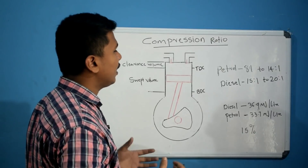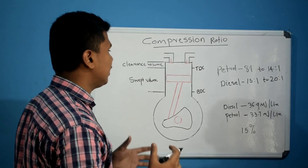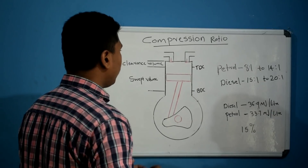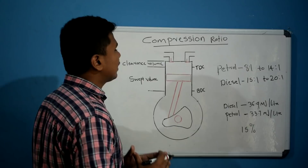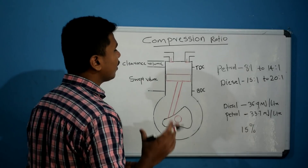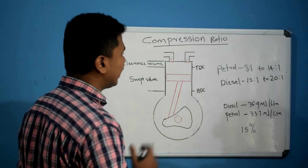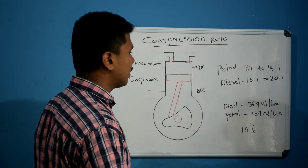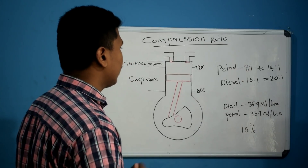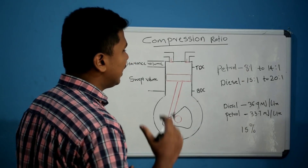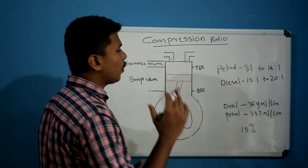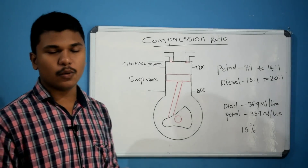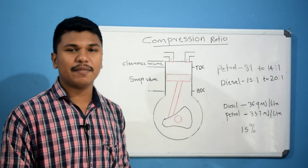In the diesel engine, air is compressed to a high pressure, and then diesel fuel is injected. This high compression ratio of the diesel engine compared to the petrol engine contributes to its fuel efficiency.